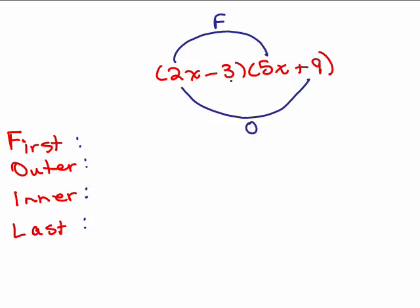We also had to do the negative 3 by each number in the second parenthesis. The negative 3 times the 5x — those are the inner two, the ones right next to each other. And the negative 3 times the 9 is the last term in each parenthesis, and that's where the word FOIL comes from: F-O-I-L.